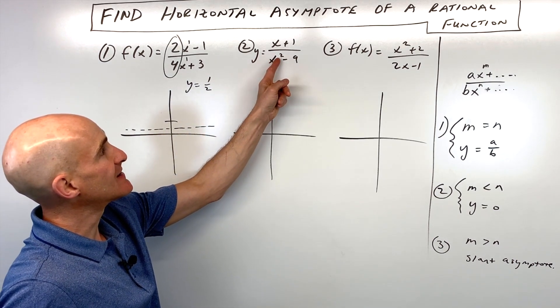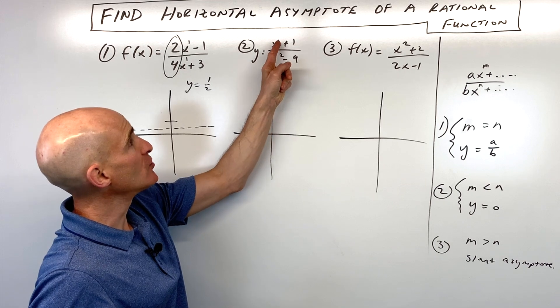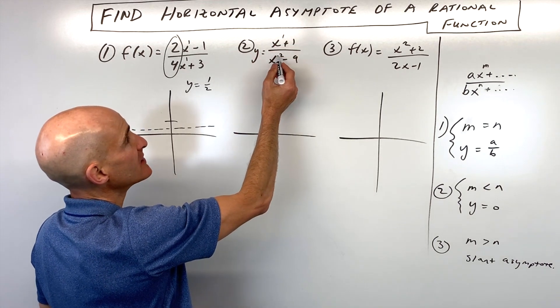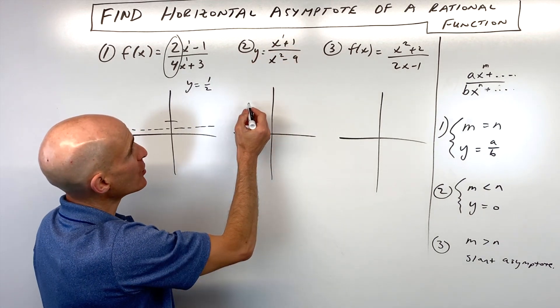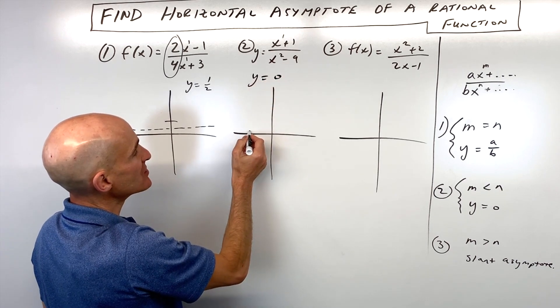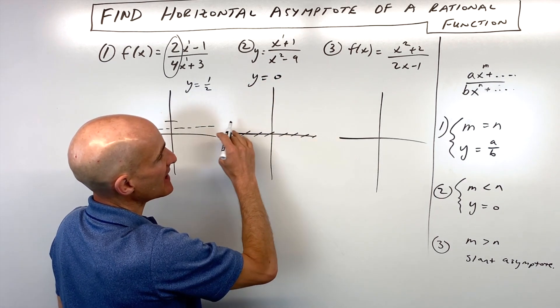For number two, you can see that the denominator's degree is two. The numerator's degree is only one. The denominator's degree is higher, so our horizontal asymptote is going to be y equals zero. That's going to be right at the x-axis.